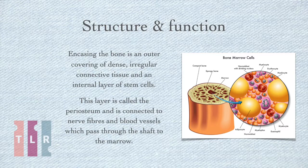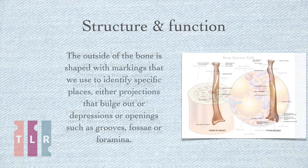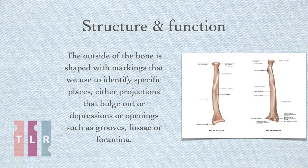Encasing the bone is an outer covering of dense, irregular connective tissue and an internal layer of stem cells. This layer is called the periosteum and is connected to nerve fibres and blood vessels, which pass through the shaft to the marrow. The outside of the bone is shaped with markings that we use to identify specific places — either projections that bulge out or depressions or openings, such as grooves, fossa or foramina.